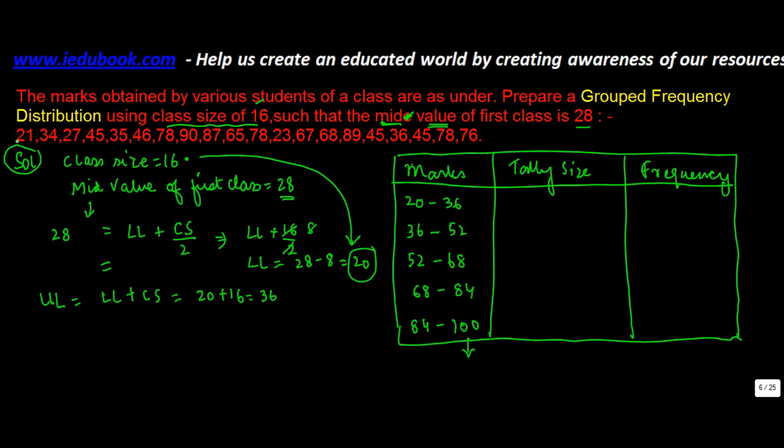So start tallying: 21, 34, 27, 45, 35, 46, 38, 78, 90,